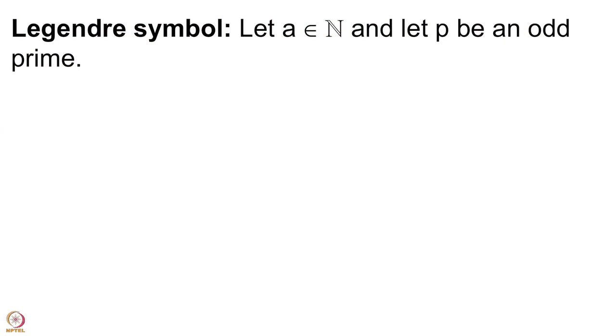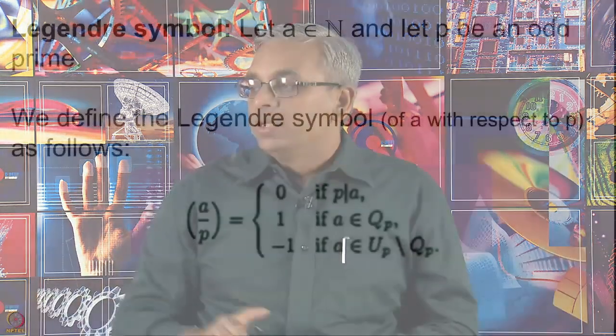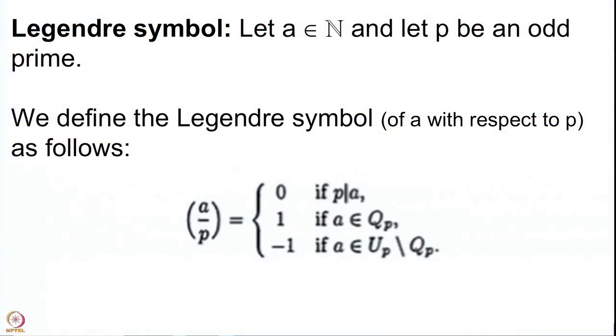We take an element A in the natural numbers and let P be any odd prime. We define the Legendre symbol of A with respect to P. Given any odd prime, we are going to define the Legendre symbol for any natural number A. The formula says the Legendre symbol is 0 if P divides A.